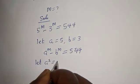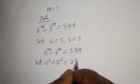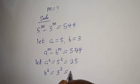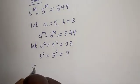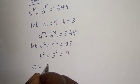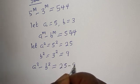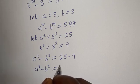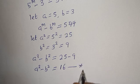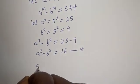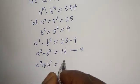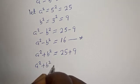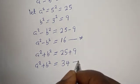Let a squared equal 5 squared, which is equal to 25, and b squared equal 3 squared, which is equal to 9. Therefore a squared minus b squared is equal to 25 minus 9, which equals 16 — let's call this equation star. Also, a squared plus b squared is equal to 25 plus 9, that is 34 — let's call this equation double star.